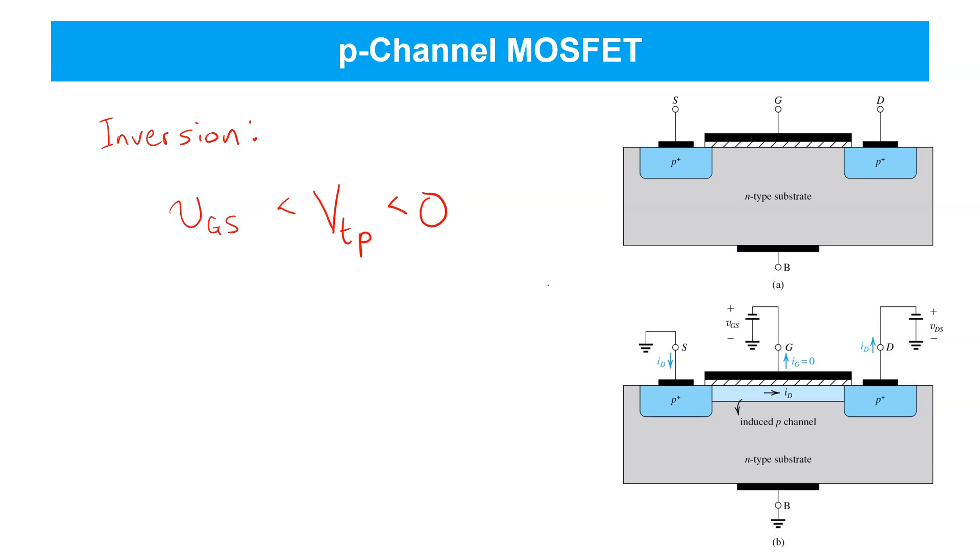However, we may often prefer to avoid all the negative signs and simply refer to the absolute values of the gate source and threshold voltages. So, we can define the absolute overdrive voltage as just being the difference between VGS and VTP.